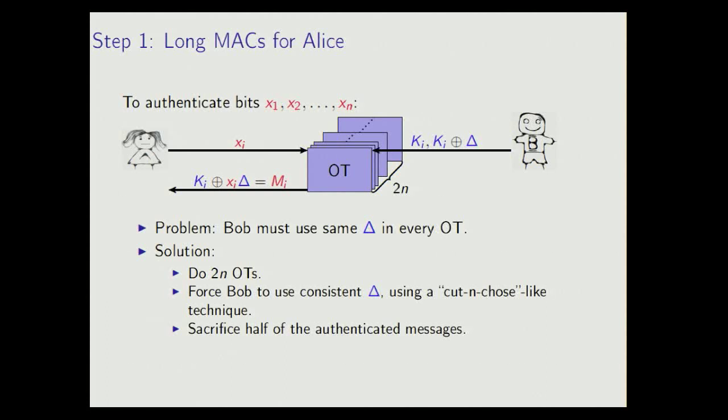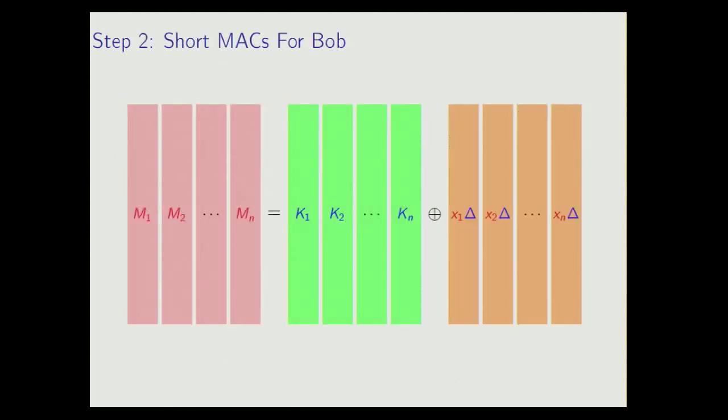Unfortunately, this will sacrifice half of the authenticated messages that we get, but it's okay because the other half is going to be good. Now, I call this a cut and choose-like technique because the good news here is that while sort of half of the messages will be revealed during this cut and choose, the keys will still remain secret. There are some details that I'm hiding here, but you can look at the paper. So now for step two.